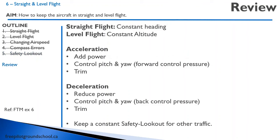Let's review. Straight flight is flight at a constant heading. Level flight is at a constant altitude. To accelerate: add power, control pitch and yaw by applying forward control pressure, and trim the aircraft to neutralize control pressure. To decelerate: reduce power, control pitch and yaw with back pressure, and trim the aircraft to eliminate pressure on the controls. We want to maintain a constant lookout for other traffic to avoid. That concludes this lesson on straight and level flight. Thanks for joining me, and we'll see you in our next lesson.